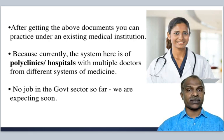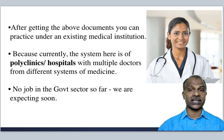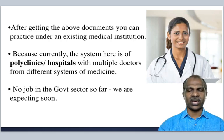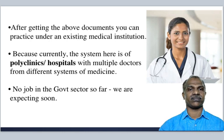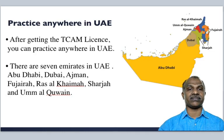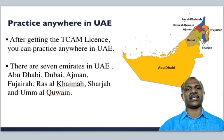After getting the above documents, you can practice under an existing medical institution, because the system here is polyclinics or hospitals with multiple doctors from different systems of medicine. There is no antagonism or tug-of-war as in Kerala or India — all systems are available in all hospitals in UAE. Currently there are no jobs in the government sector, but that is expected soon. After getting the TCAM license, you can practice anywhere in the seven Emirates: Abu Dhabi, Dubai, Ajman, Fujairah, Ras al-Khaima, Sharjah, and Ummulqain.